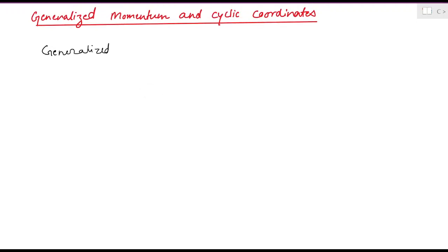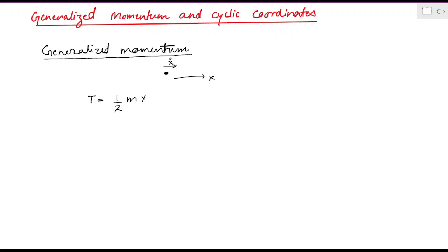Let's start simple and discuss a simple case, then we will generalize it to define our generalized momentum. Take the simplest example of a particle moving along the x-axis with velocity Vx, or x-dot. The kinetic energy of this particle is T = ½mv². If you take the derivative of this kinetic energy with respect to the velocity coordinate x-dot, you get ½m times the derivative of x-dot squared, which gives 2x-dot, or mx-dot. And mx-dot is m times V, which is your momentum.